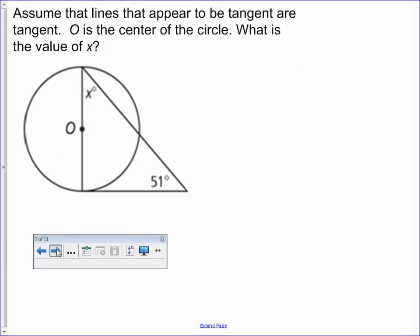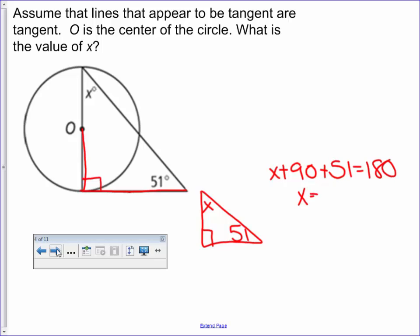So let's look at this first one. We're assuming that the line that appears to be tangent is tangent. So if we assume that, then we know that's a 90-degree angle. We're trying to solve for X. So really, we have a triangle with three angles. So what we just talked about, 180. Add them up. X plus 90 plus 51. Is that equal to 180? So the X is 39 degrees. The angle is 39 degrees. So that's with angles.